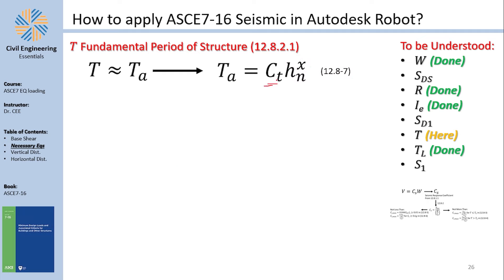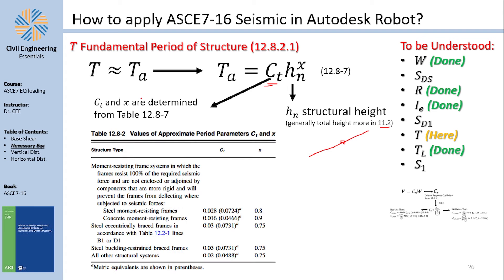CT and the exponent x are taken from table 12.8-2, depending on the structural type and material — for example, a concrete frame uses specific CT and x values; structures not explicitly listed use default values. HN is the total structural height, with more details in section 11.2, including guidance on sloped roofs.